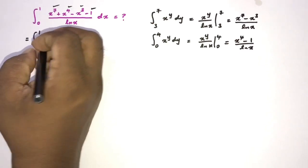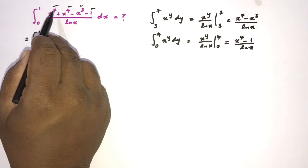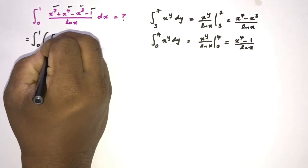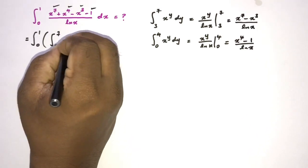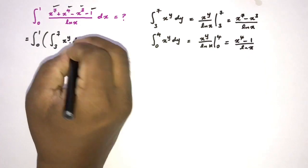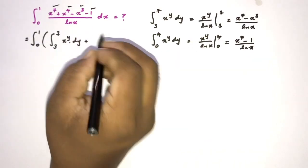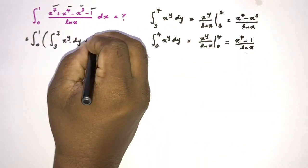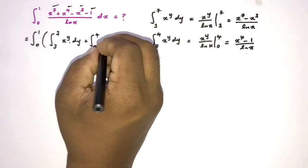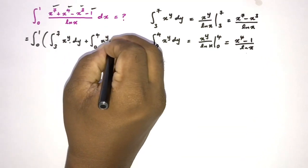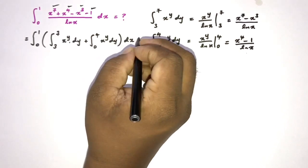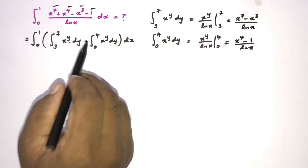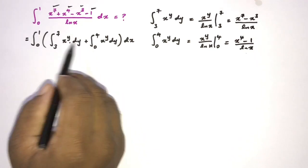Therefore we can write our original integral as the integral from 0 to 1, where instead of x to the 7th minus x cubed over natural log of x we write the integral from 3 to 7 of x to the y dy, plus instead of x to the 4th minus 1 over natural log of x we write the integral from 0 to 4 of x to the y dy, all times dx.